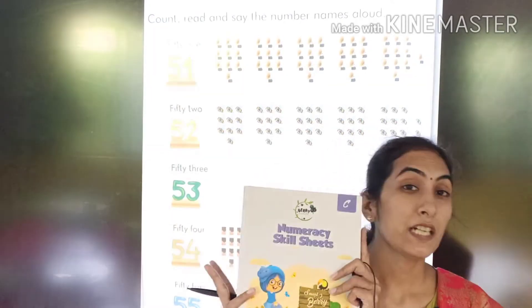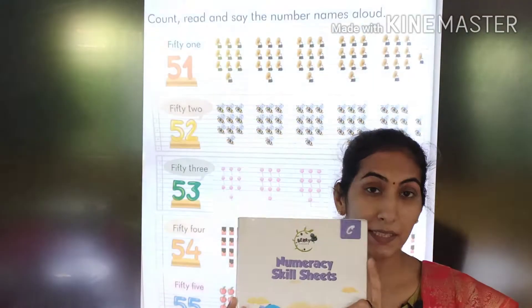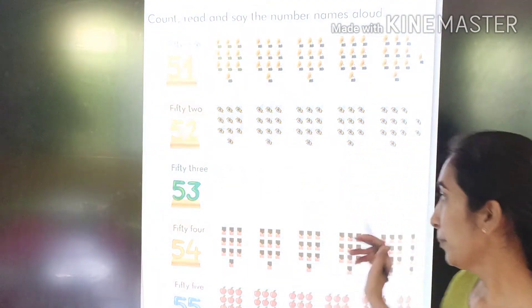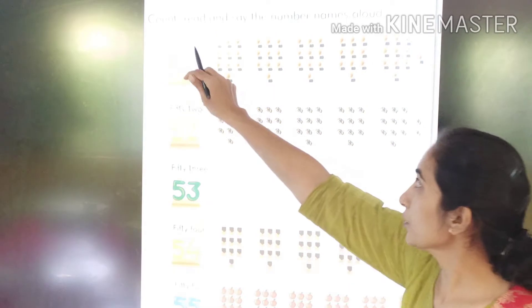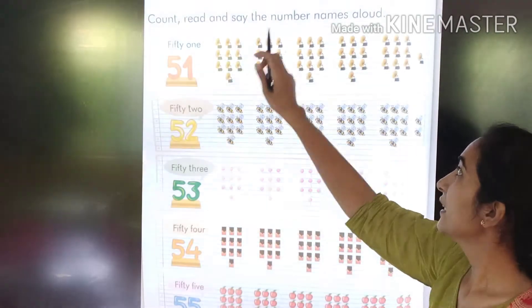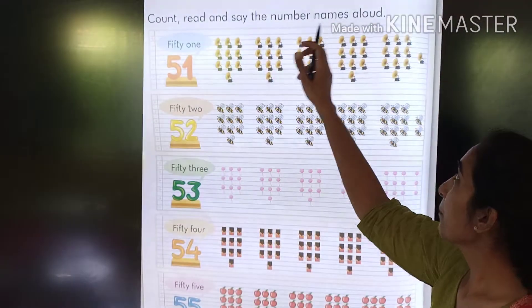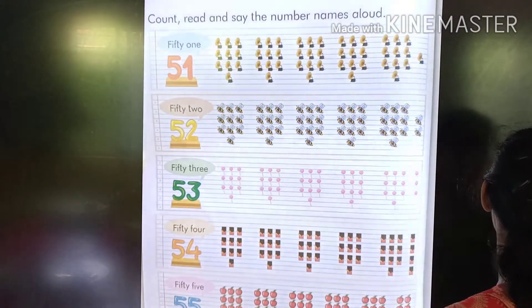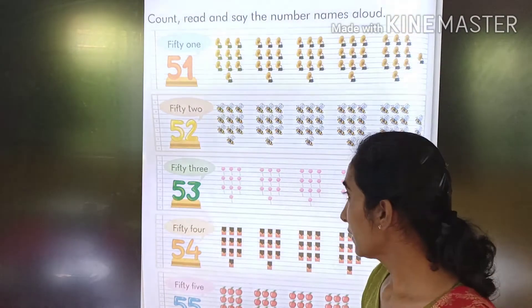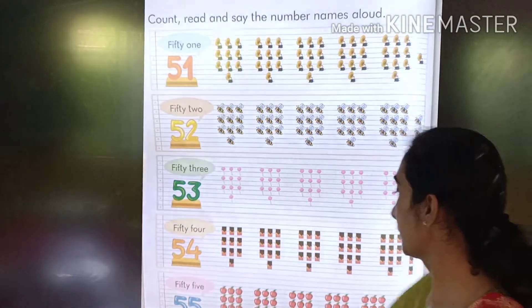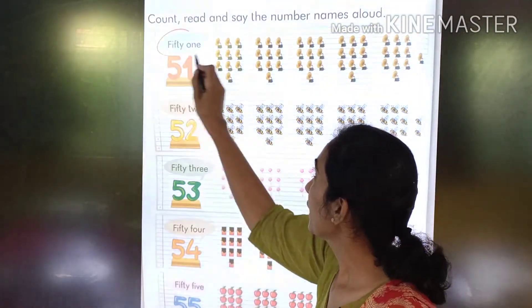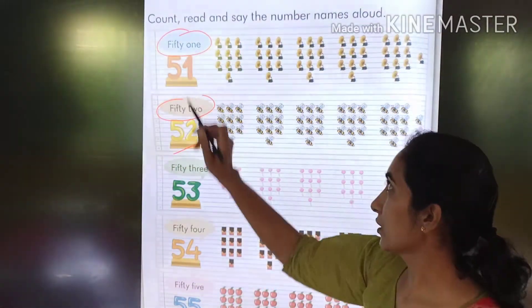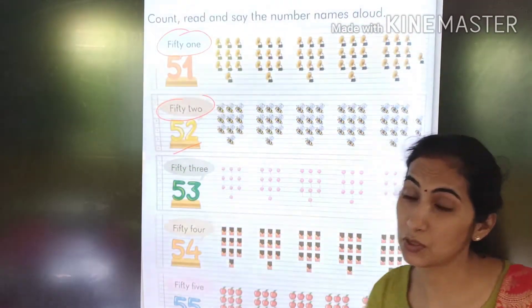So students, take out this book, numeracy skill. Take out page number 90. Page number 90, what you have to do? Count and read and say the number names aloud. Number names. These are number names. This is 51, 52, these are number names. These are numbers, but these are number names.